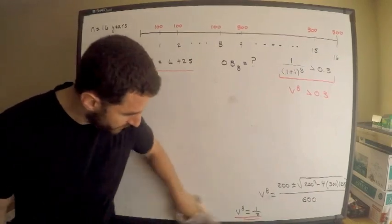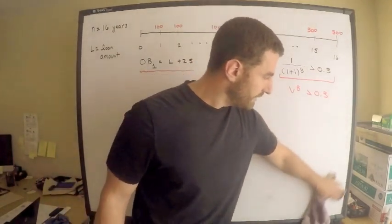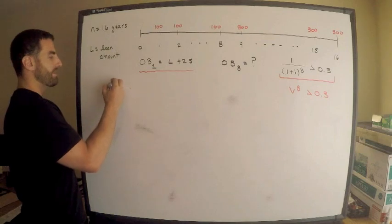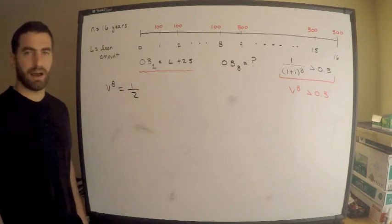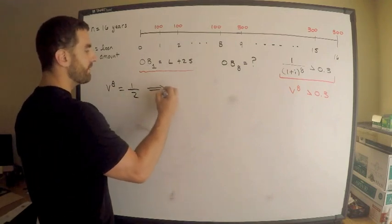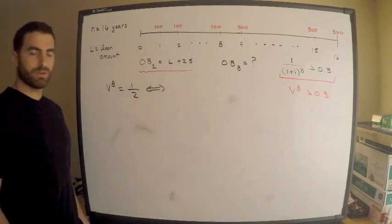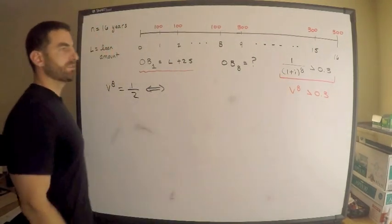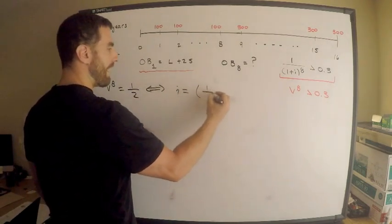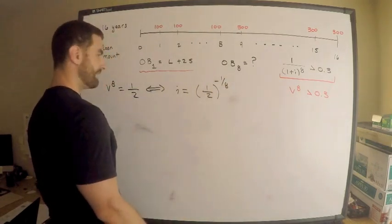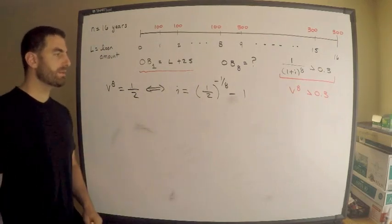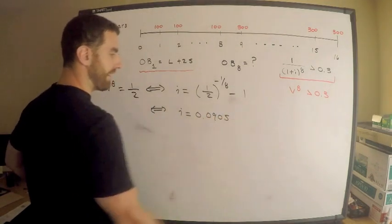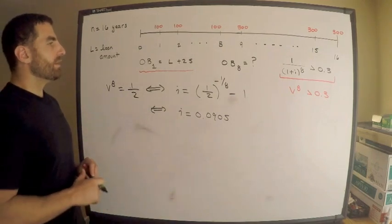Now that v^8 equals 1/2, we can find i. By definition, v^8 equals 1/(1+i)^8, so (1+i)^8 equals 2, giving i equals 2^(1/8) minus 1, equivalently (1/2)^(-1/8) minus 1, which is approximately 0.0905, or about 9.05%.